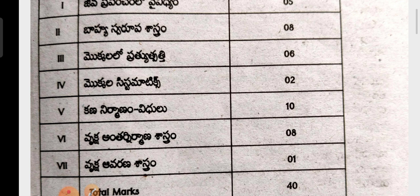In Vrikshi Shashtram, the second unit has 3 marks and the fifth unit has 3 marks — this is the first priority. Next, the sixth unit of Vrikshi Shashtram is also important. You can score more marks from these units.